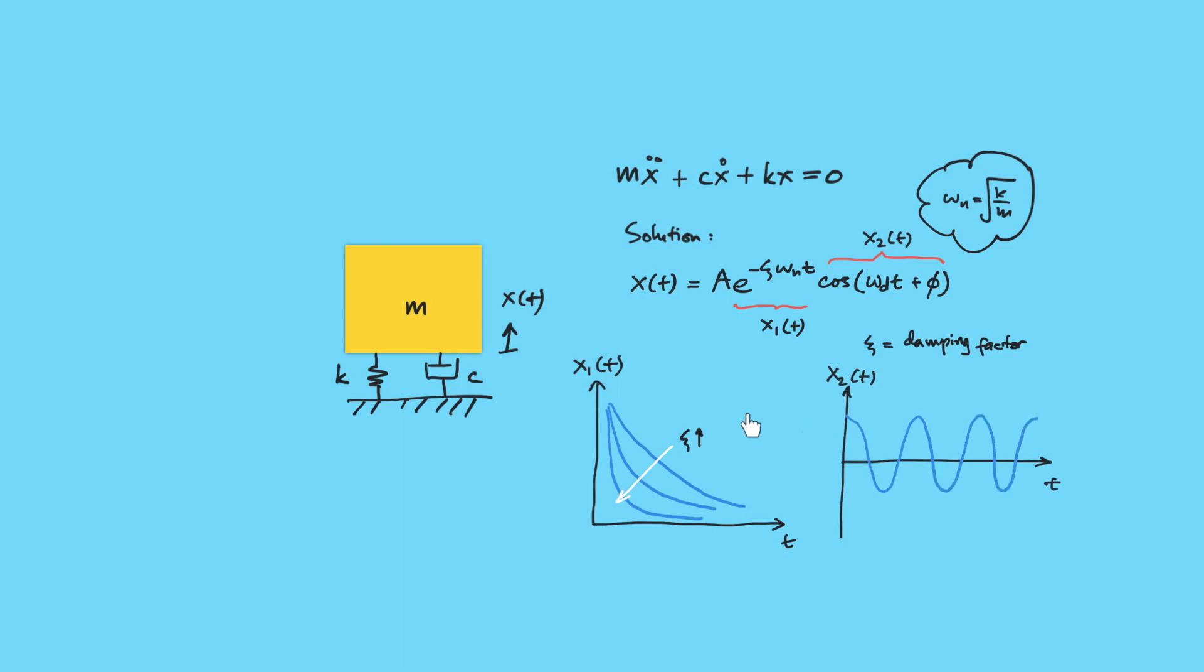And so from these visualizations, we can see that if we multiply x1 by x2, we multiply each value in the cosine functions with each value in the exponential term. So the graph will look like this fluctuating but decaying response.